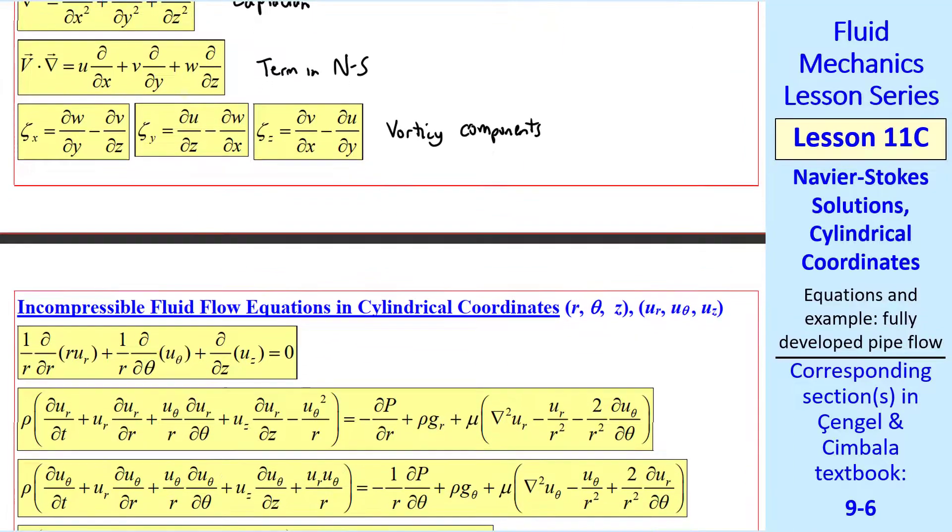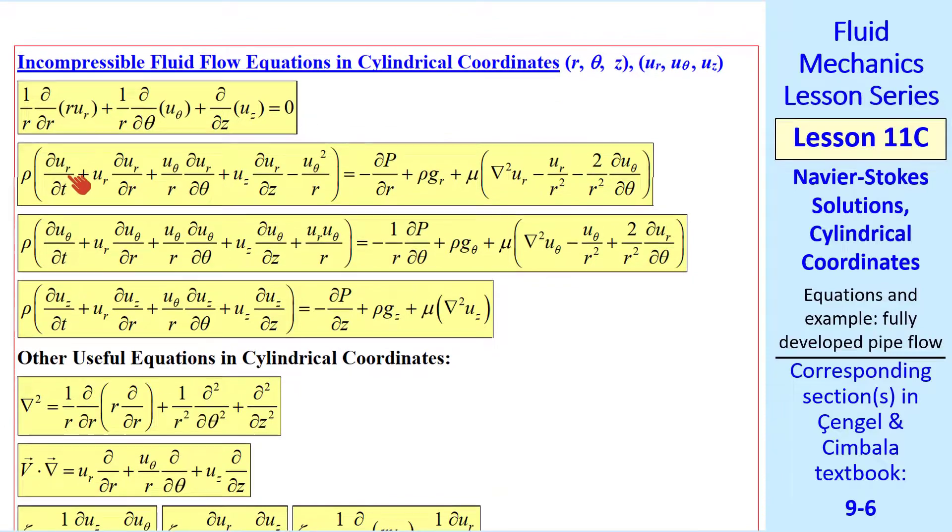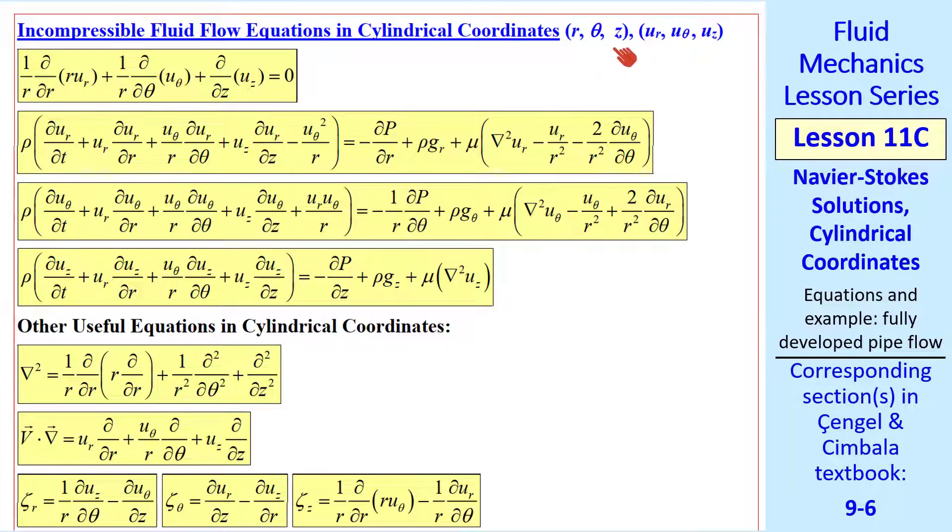Here's some other useful equations: the Laplacian operator, which you can see here. In this case, it's del squared w. The continuity equation is a scalar equation, so there's just one. The Navier-Stokes equation is a vector equation, and we split it into three components. We see this v dot del term in the Navier-Stokes equation. I expand that out in Cartesian coordinates here. And finally, these are the vorticity components: zeta x, zeta y, and zeta z.